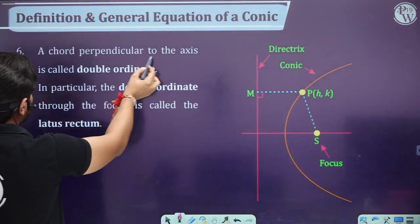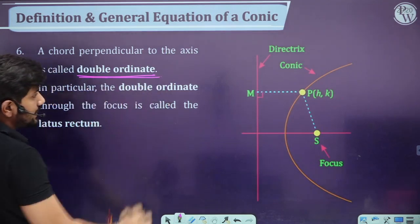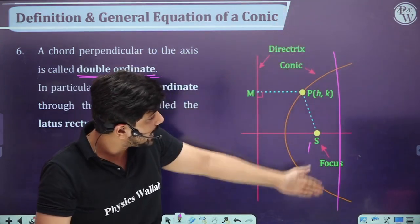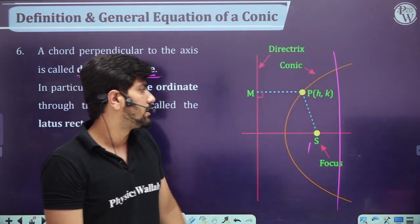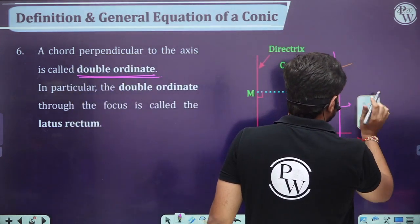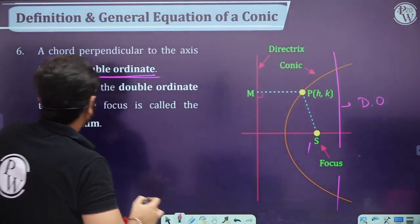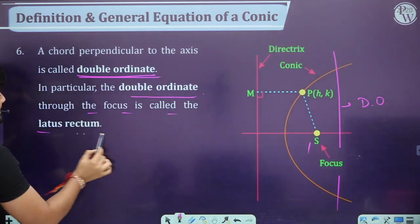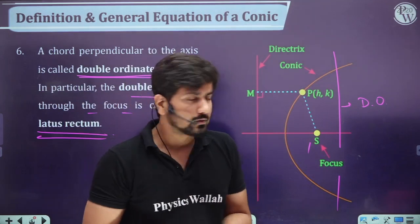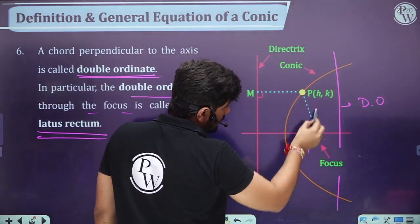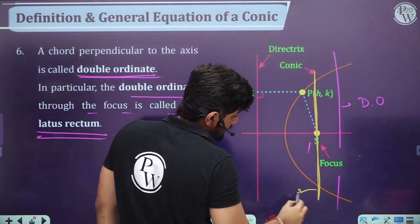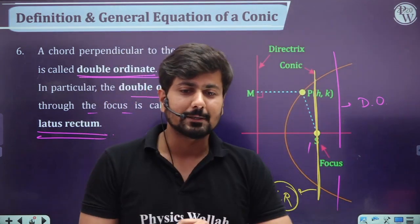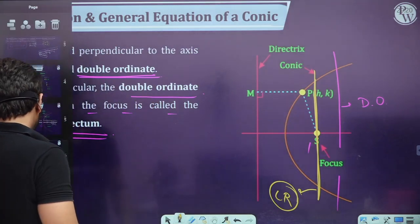A chord perpendicular to the axis is called a double ordinate (D.O.). The double ordinate passing through the focus is called the latus rectum of the conic — this is a very important term.